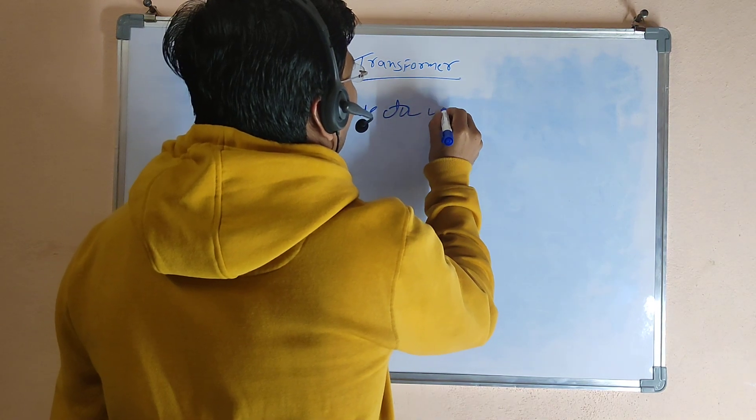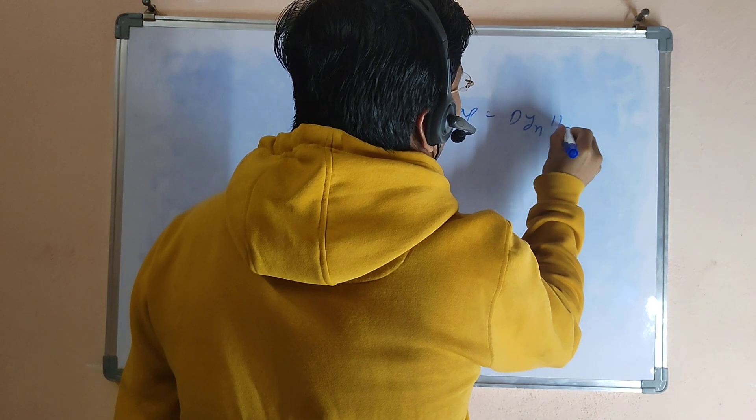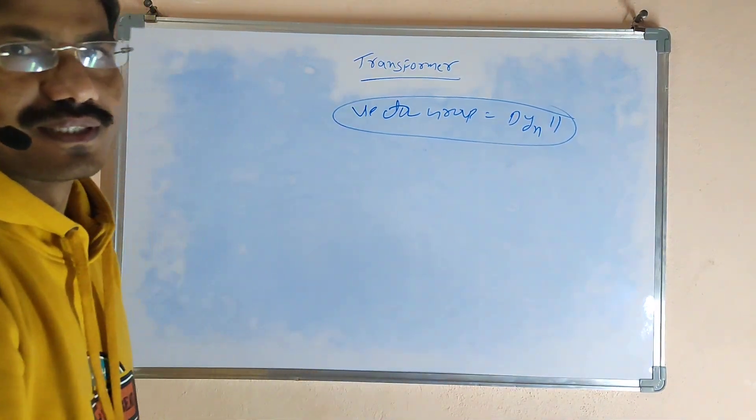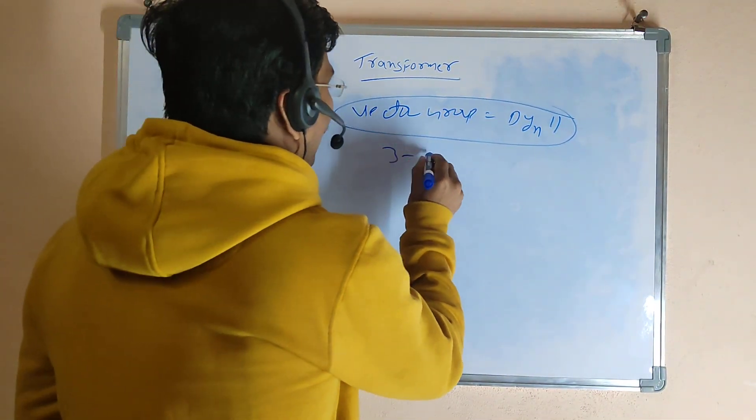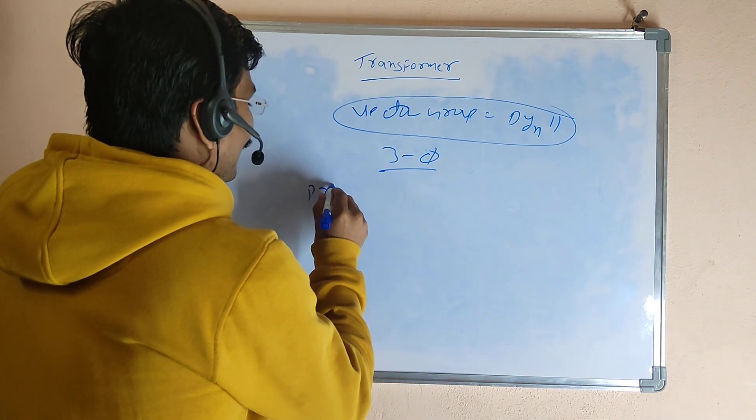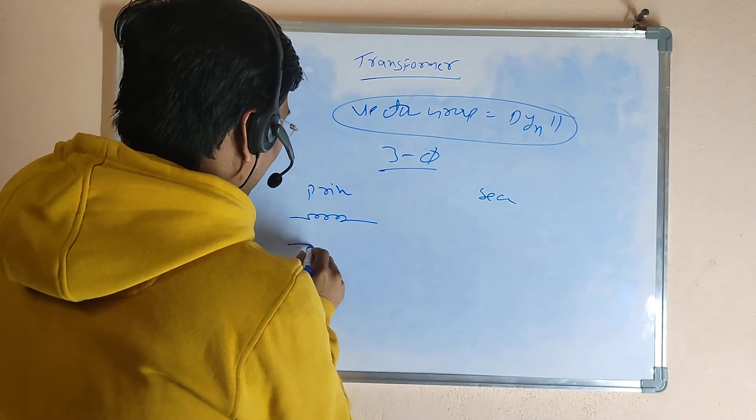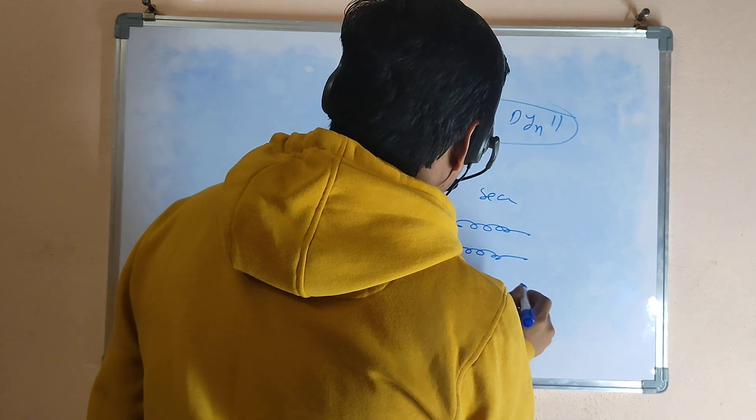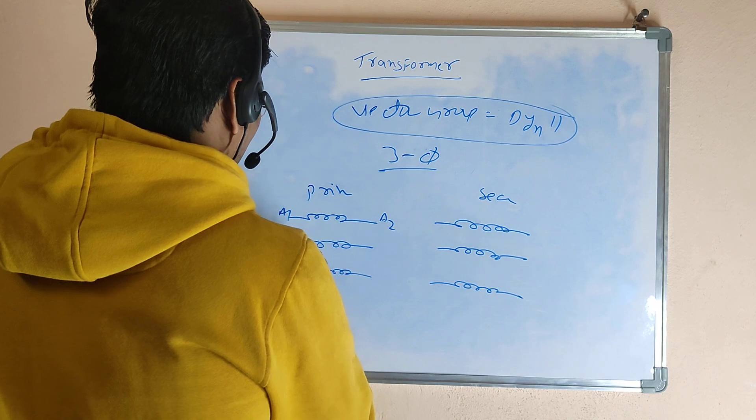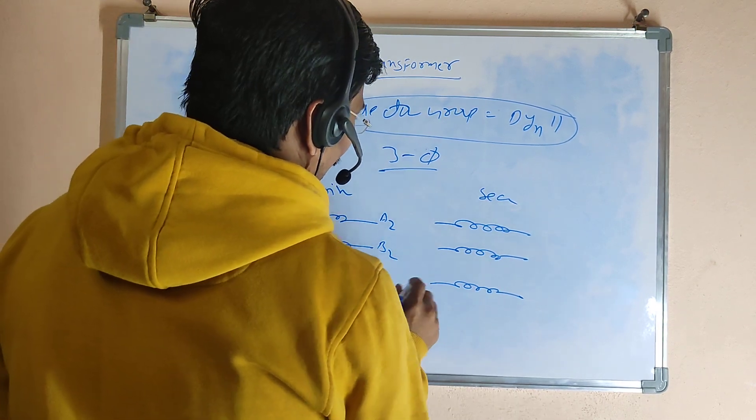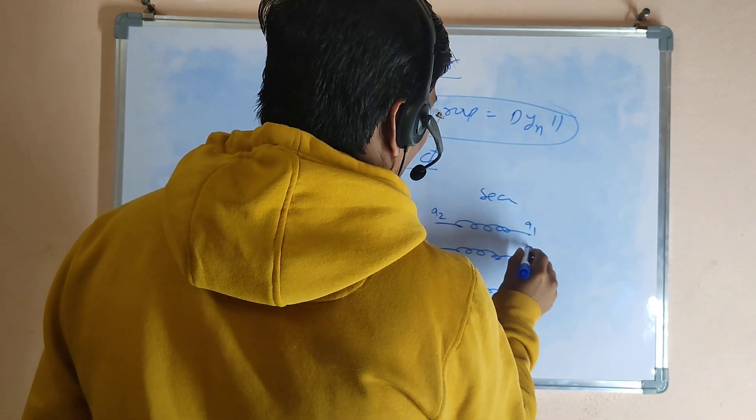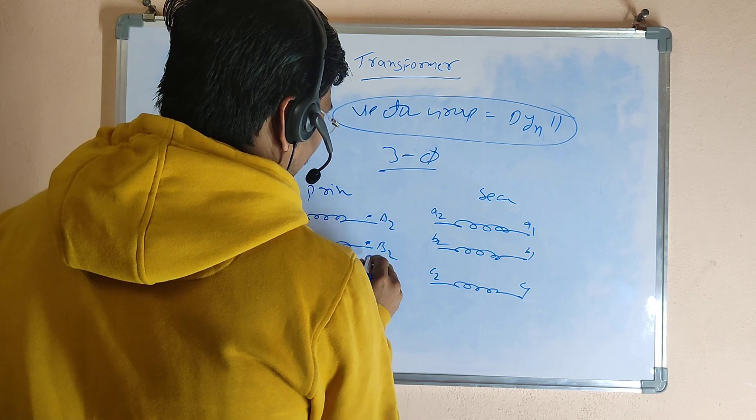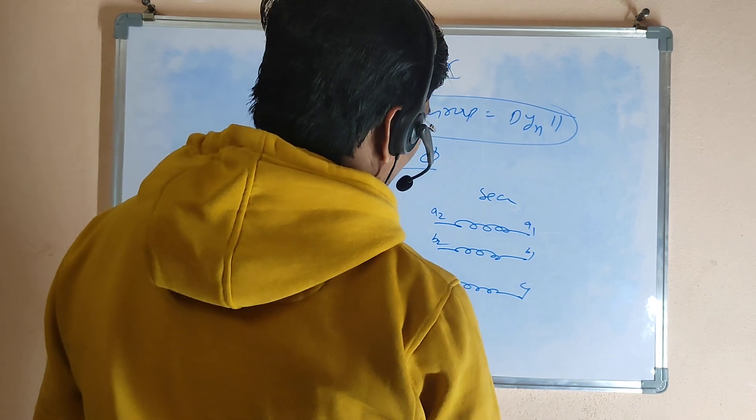Basically, the three-phase transformer winding has a primary side and secondary side. This is a1, this is a2, this is b1, this is b2, this is c1, this is c2. Same on the secondary side: a1, a2, b1, b2, c1, c2. These are the polarities of the windings.